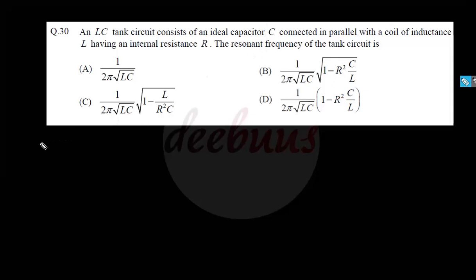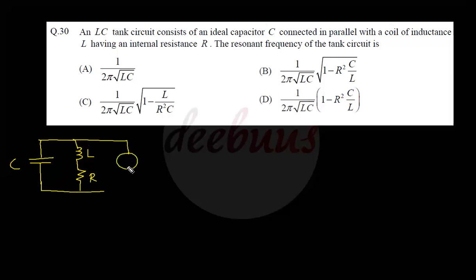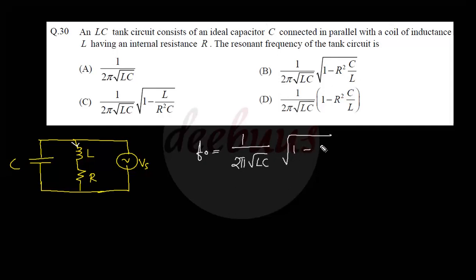Moving to the LC tank circuit question: it consists of an ideal capacitor C connected in parallel with a coil of inductance L having internal resistance R. From theory, the resonant frequency of this tank circuit is 1 divided by (2π) times the square root of (1/LC) times (1 minus R²C/L). The answer is option B.